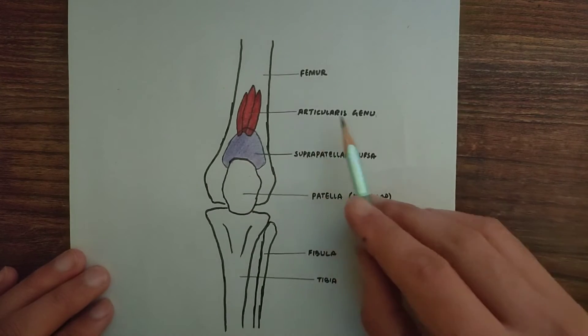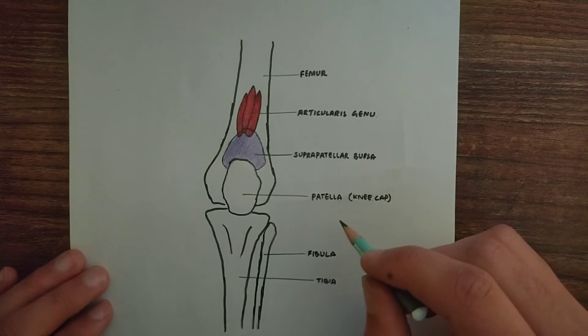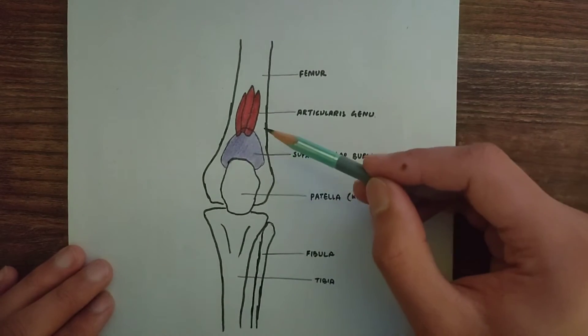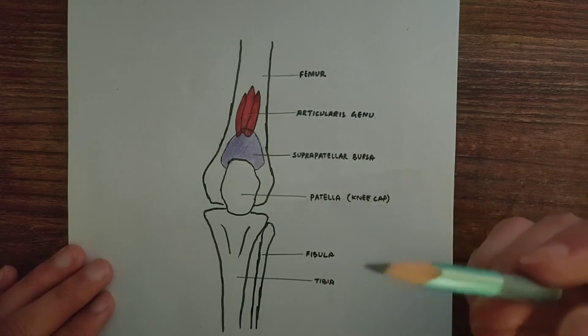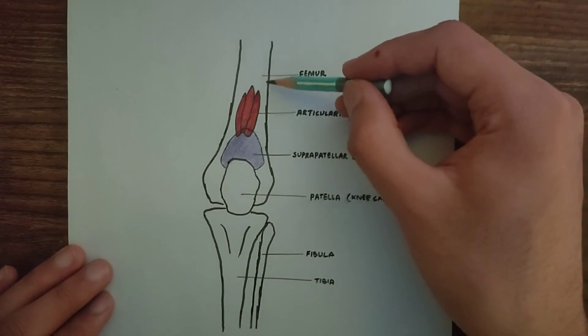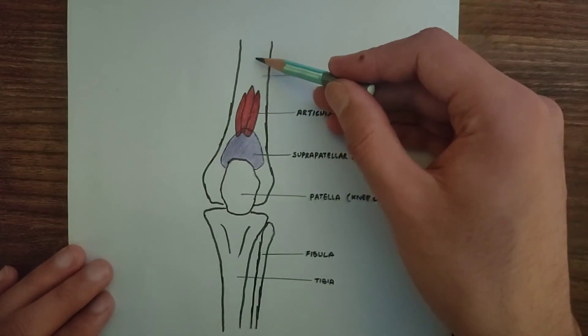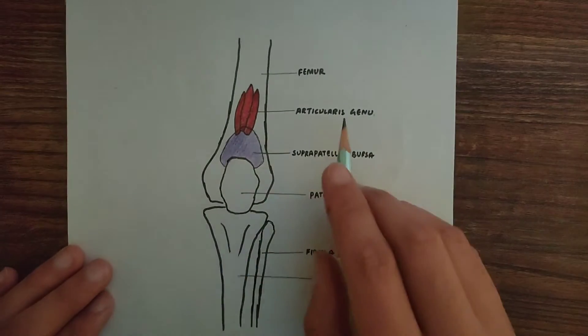Now let's see the origin of Articularis genu muscle. It arises from the anterior surface and lower part of the shaft of femur. This is the shaft of femur and this is the anterior surface and this is the lower part.